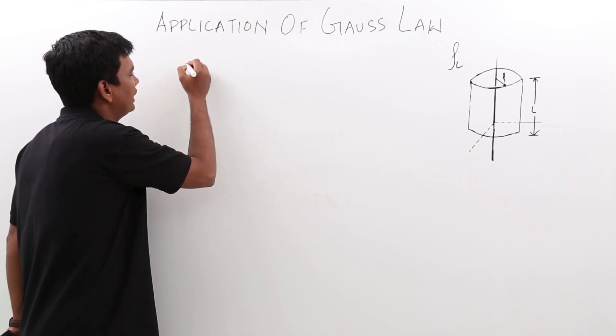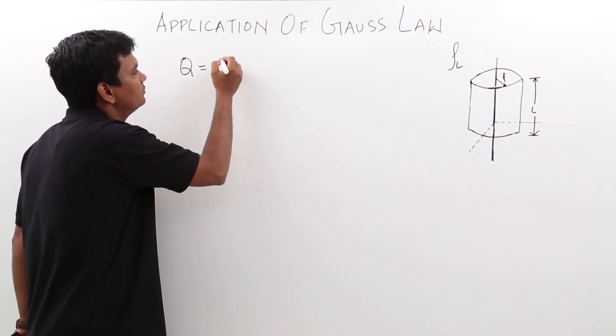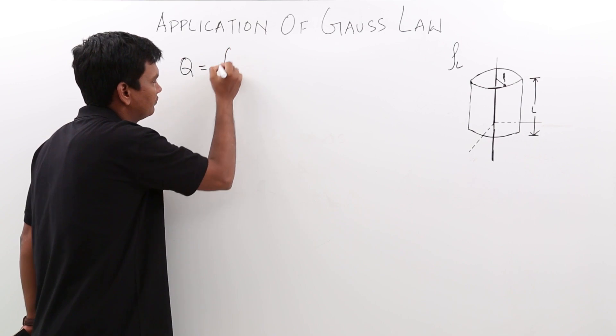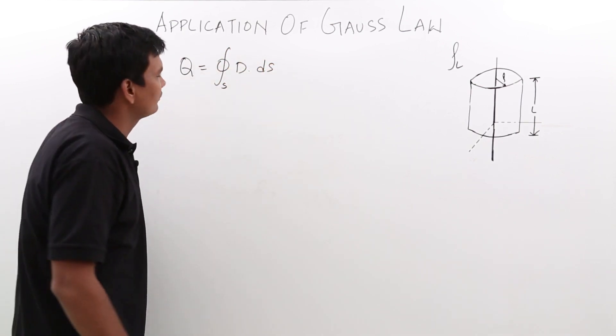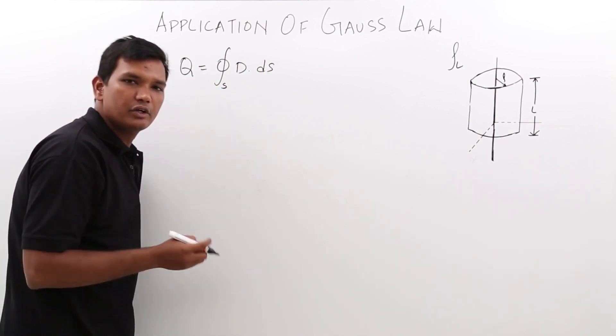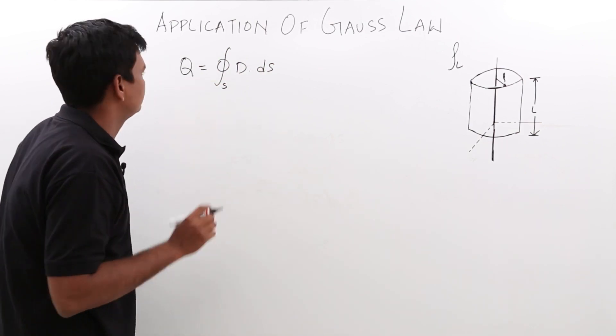From the Gauss law we know that q is equal to the integral of D dot ds over the surface. In this case we are going to take the cylindrical coordinator.